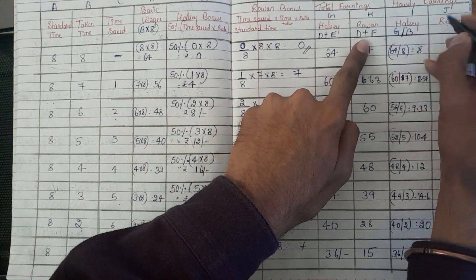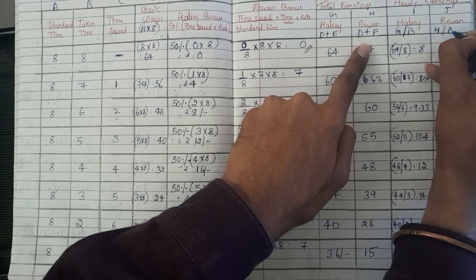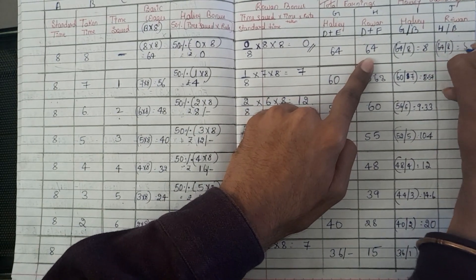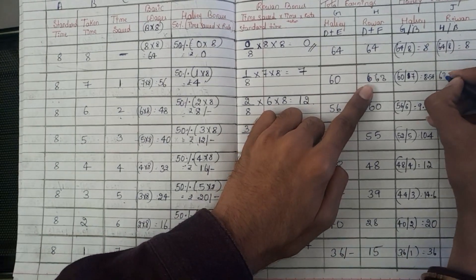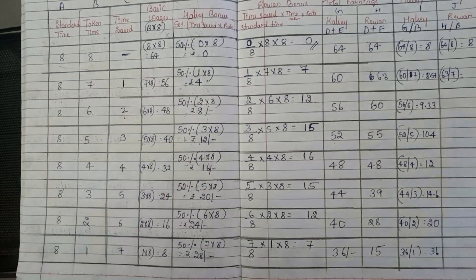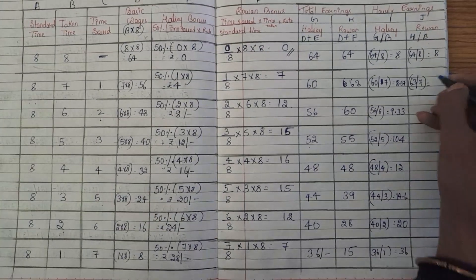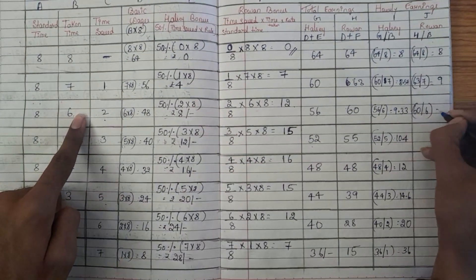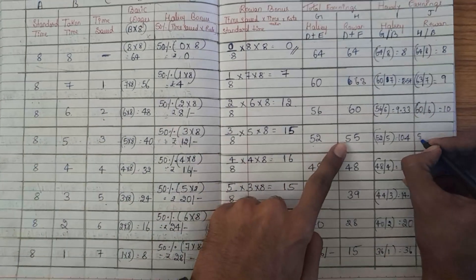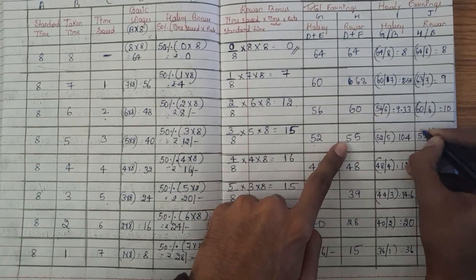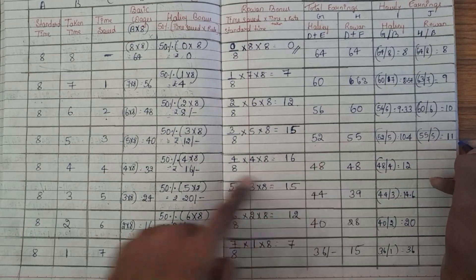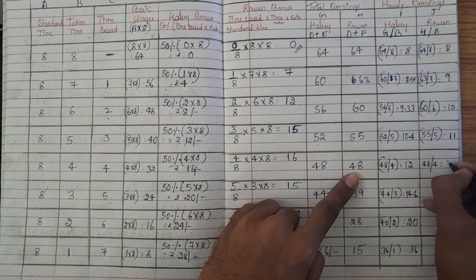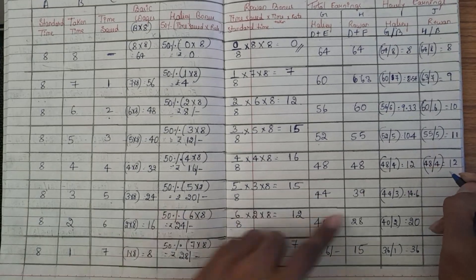For the Rowan plan hourly earnings, the formula is H column divided by B column: 64÷8=Rs.8; 63÷7=Rs.9; 60÷6=Rs.10; 55÷5=Rs.11; 48÷4=Rs.12.